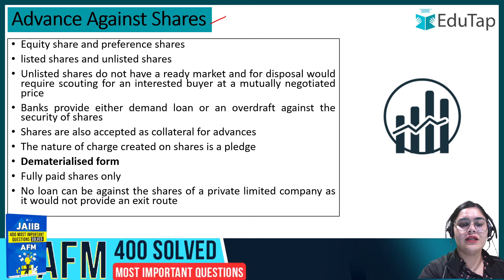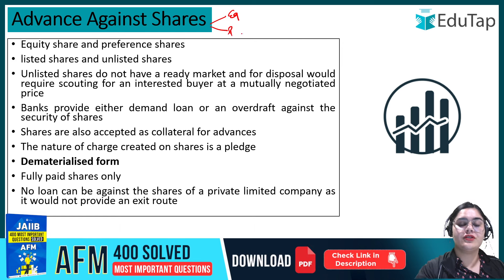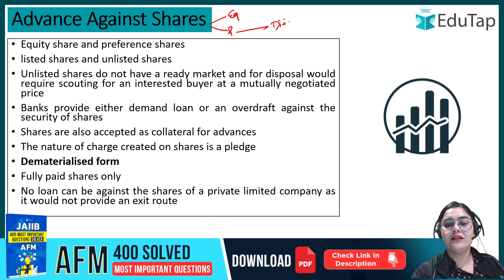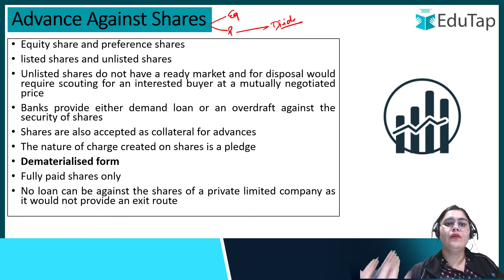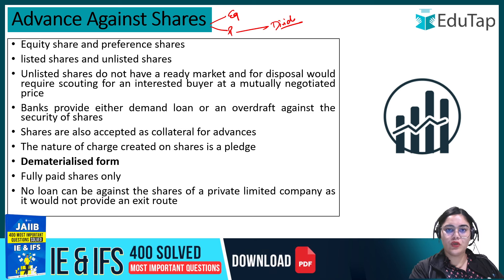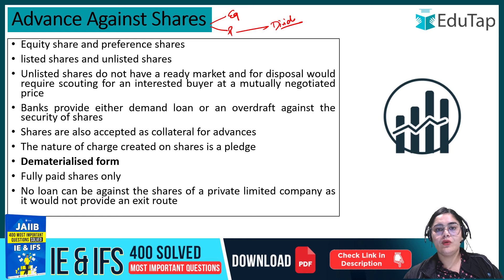Shares can be of two types: equity shares or preference shares. When preference shareholders get a dividend, they get priority over equity shares. So first, dividend is paid to preference shareholders, then dividend can be paid to equity shareholders.